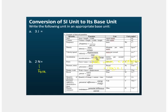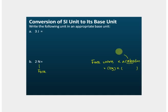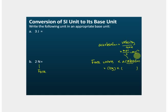Velocity is also a derived quantity — velocity equals displacement divided by time, so its unit is meter per second. Acceleration equals velocity divided by time, so its unit is meter per second divided by second, which gives meter per second squared, written as m·s⁻².